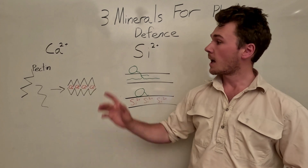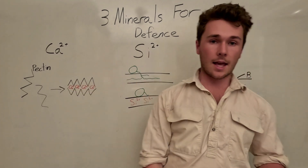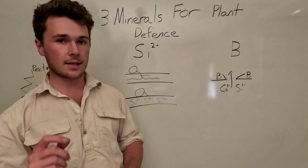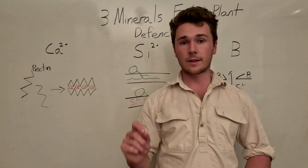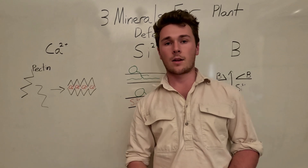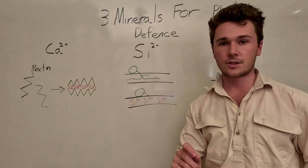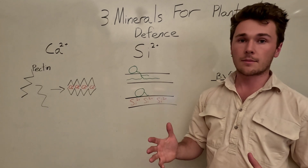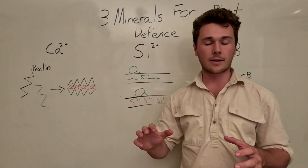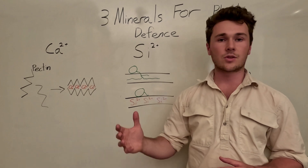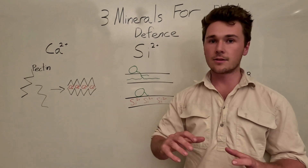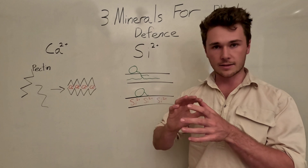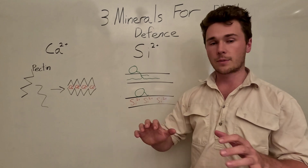The three minerals are calcium, silicon and boron, and I'll touch on exactly why each of these play a massive role in our plant defense. Ultimately these three have a synergistic effect on the cell wall. The cell wall is very important as it creates a physical barrier to prevent pathogens from entering into the cell, so it's super important to make sure that our cell walls in our plants are super strong.